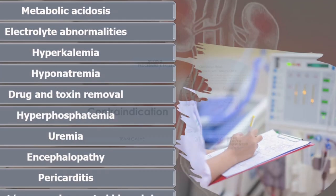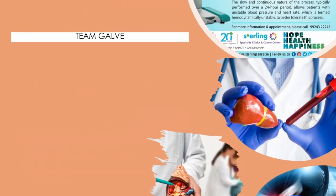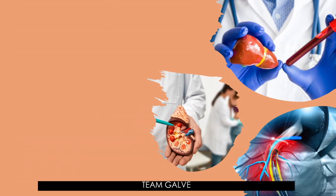What about the contraindications? The main contraindication for CRRT is the need to have treatment outcomes reached more rapidly than the CRRT treatment can accomplish. The following is a comprehensive list of contraindications to perform continuous renal replacement therapy.